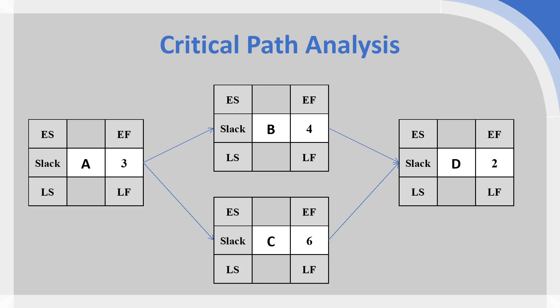Every project we start with zero, because starting on day one knocks everything out of whack — activity A takes three days, so if the early start were day one, one plus three would give an early finish of four, which is misleading. So we put zero in the top-left of activity A: the earliest it can start is day zero. Adding three gives us an early finish of day three.